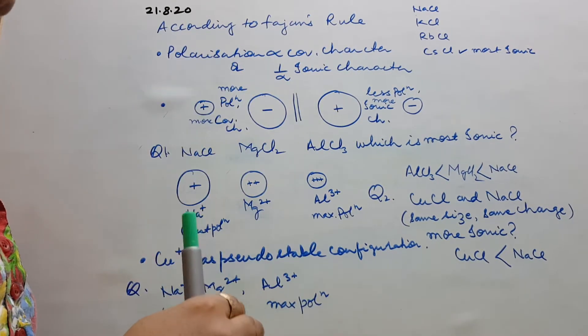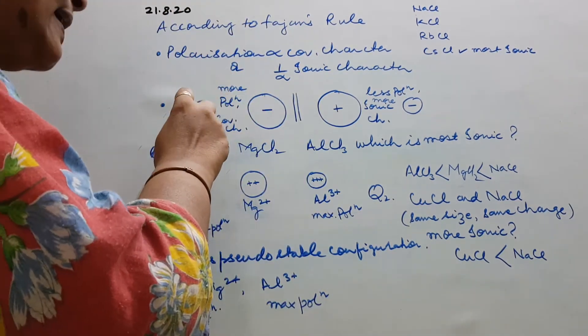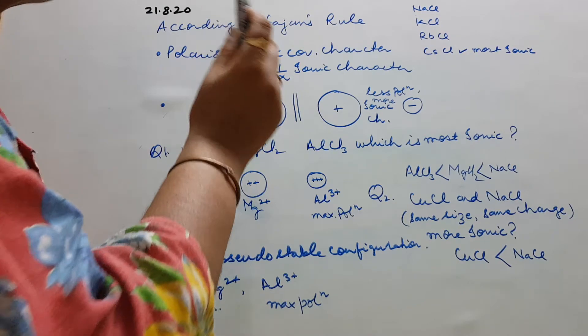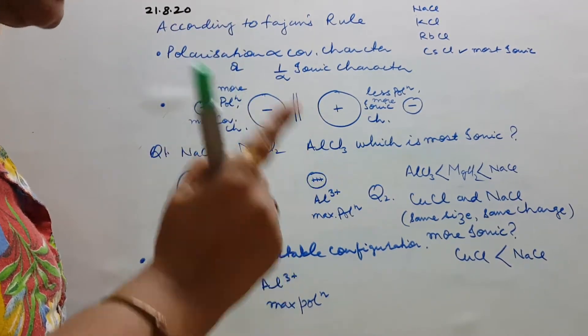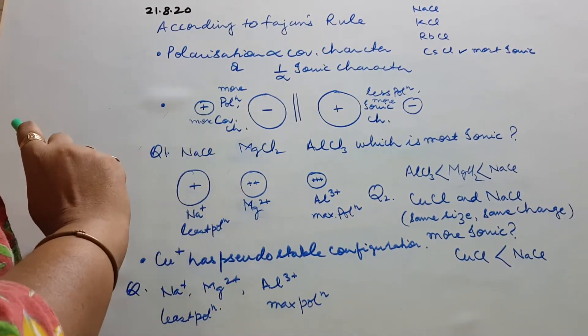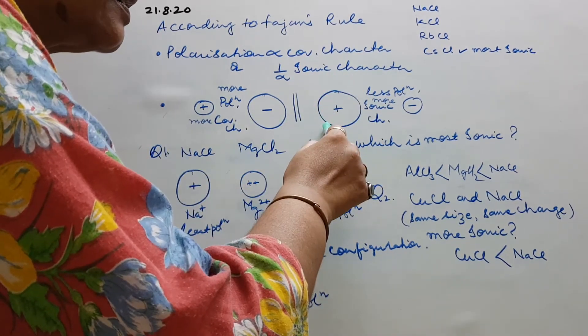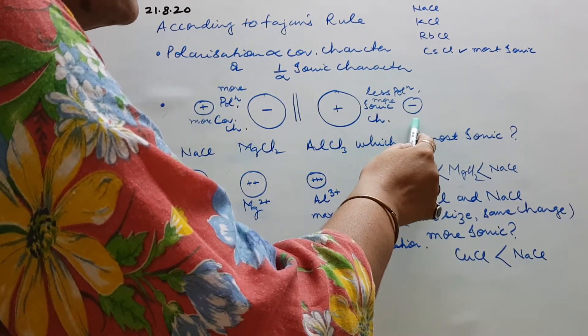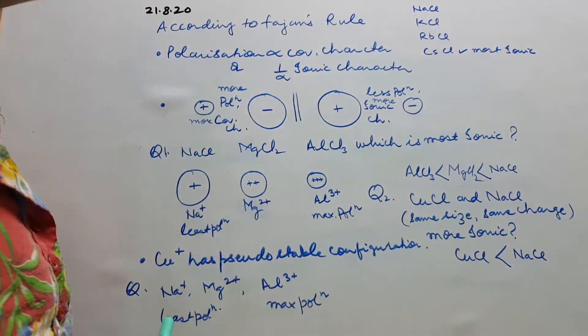Now what did Fajan say? What all factors govern? We have seen, just in short: small cation and big anion, more will be the polarization. This point you have in the last video. And more will be the covalent character. Or say opposite, big cation and small anion, lesser will be the polarization and more will be the ionic character.